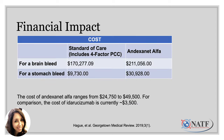Everyone always worries about how much these agents cost, and the truth is that andexanet alfa is by far the priciest option. Its lack of superior outcomes compared to standard of care have made some institutions choose to continue using four-factor PCC to reverse DOAC-associated bleeding. While you don't pay directly for these medications, the cost may impact your out-of-pocket costs as well as the amount of money the hospital will be reimbursed for your admission. The important thing to remember is that these agents all work well to reverse your anticoagulation and stop your bleeding, and each hospital has its own guideline and clinical pathway for anticoagulation reversal.